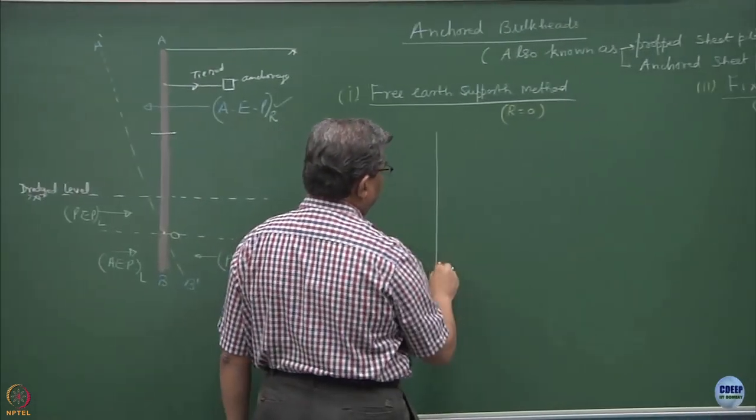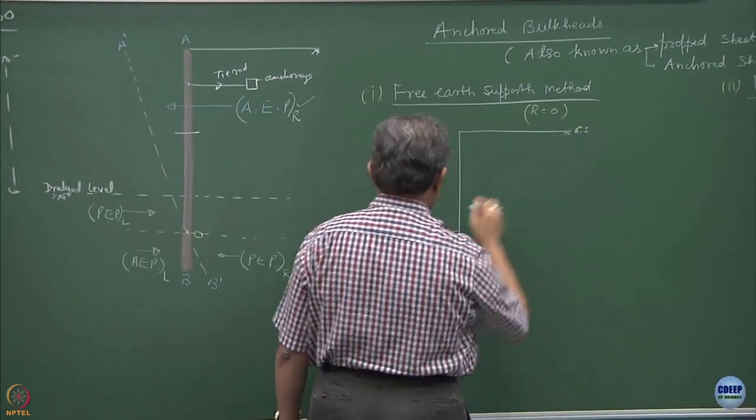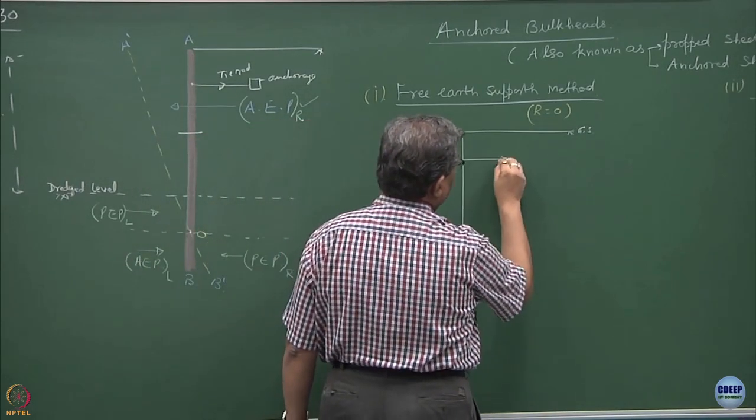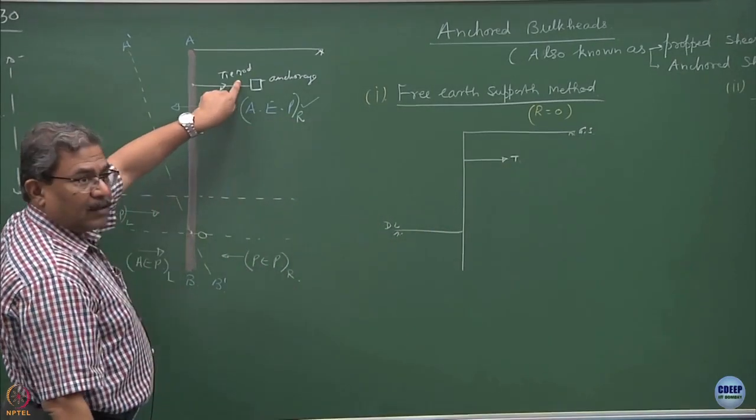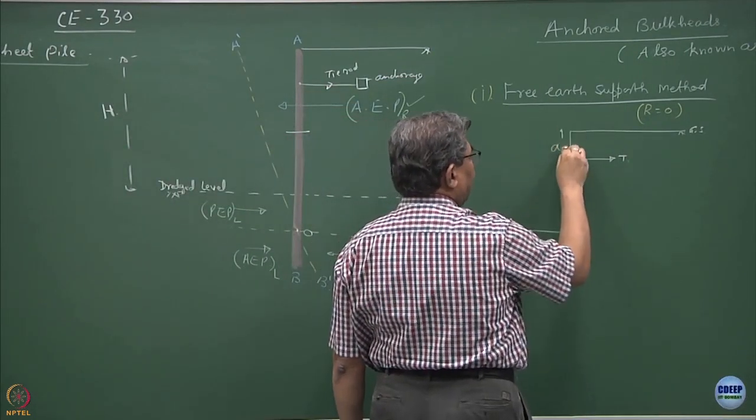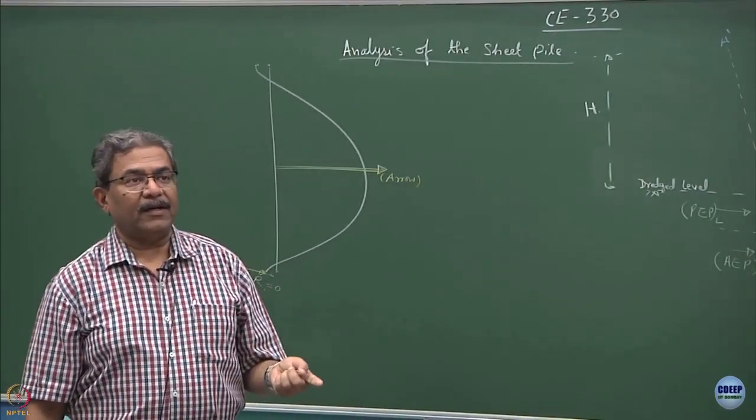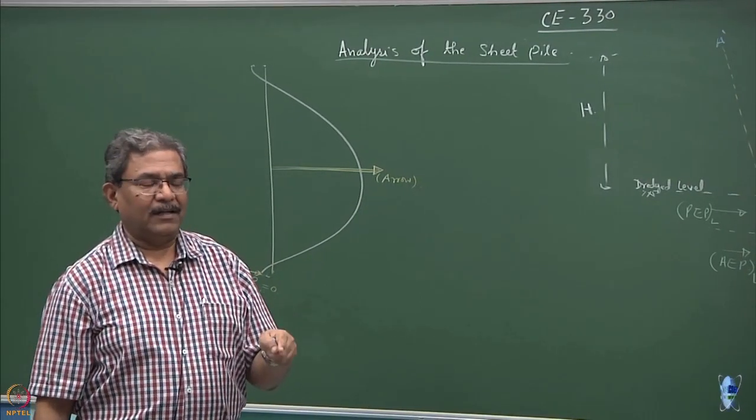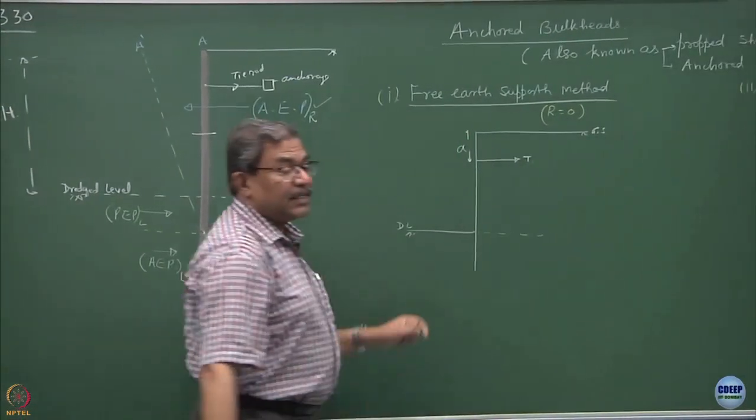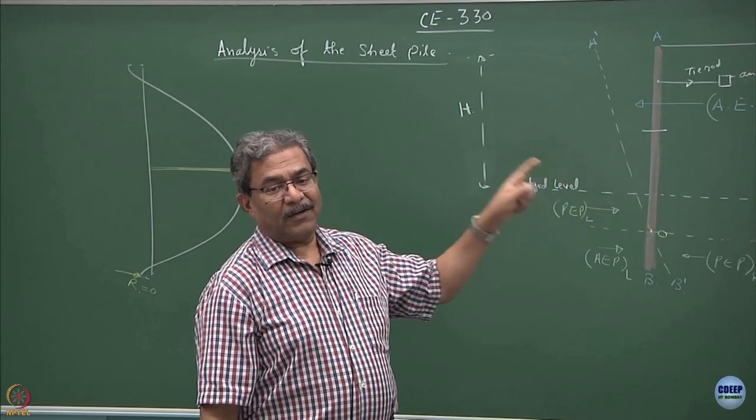So, for analyzing the situation, if I consider this is the ground surface, this is the dredge level, somewhere here you have a tension component which is coming over because of the tie rod or the propping, we normally assume this to be a depth A. Sometimes you have to assume A when you are designing or sometimes A might be provided, there is no issues. Now, the question is draw the deflected shape of this type of a sheet pile and draw the pressure distribution.